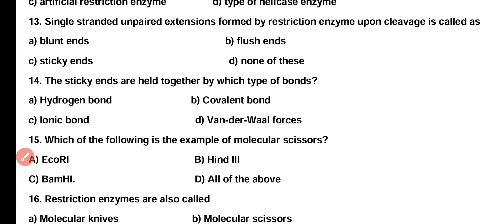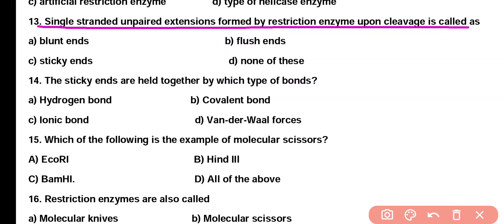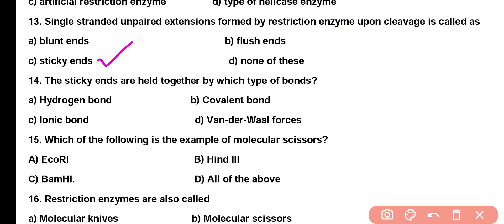Question 13. Single stranded unpaired extensions that are formed by restriction enzyme upon cleavage are called: Option A: blunt ends, Option B: flush ends, Option C: sticky ends, Option D: none of these. Correct answer is Option C. Sticky ends are the single stranded unpaired extensions that are formed when restriction enzymes cleave DNA.